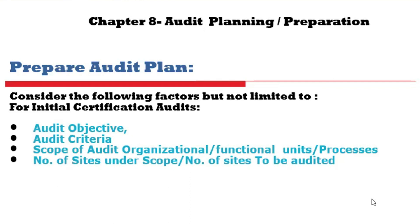Scope means what activities and processes you are going to cover, which departments you are going to cover. That is scope. Like coding activities you are going to audit, like the pipe mail you are going to audit, like the certification of the whole organization — these are examples of scope.